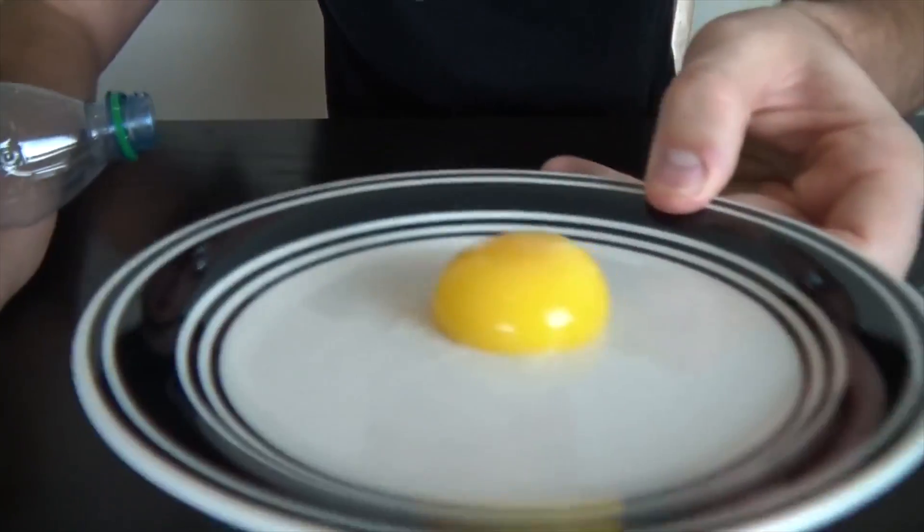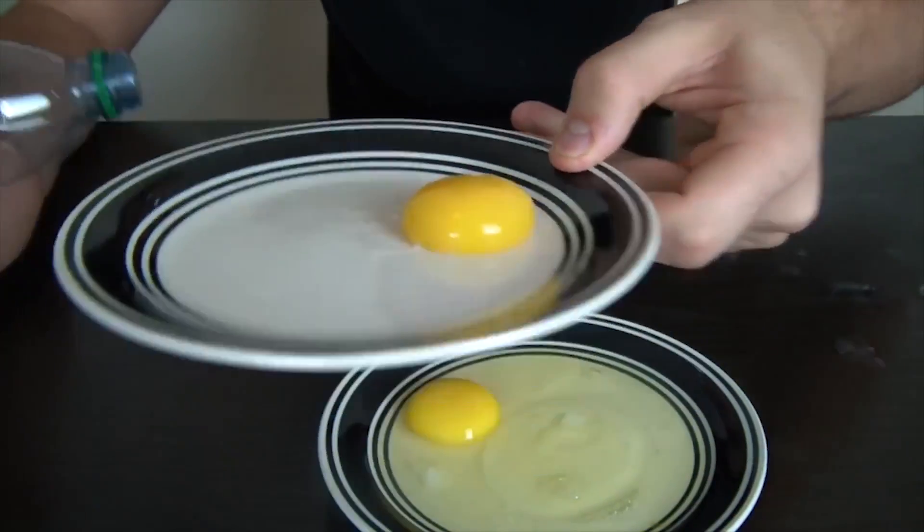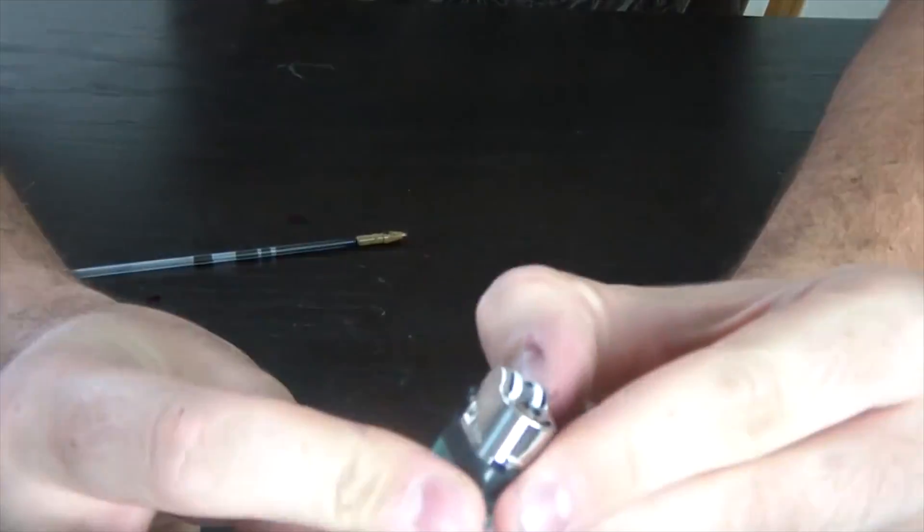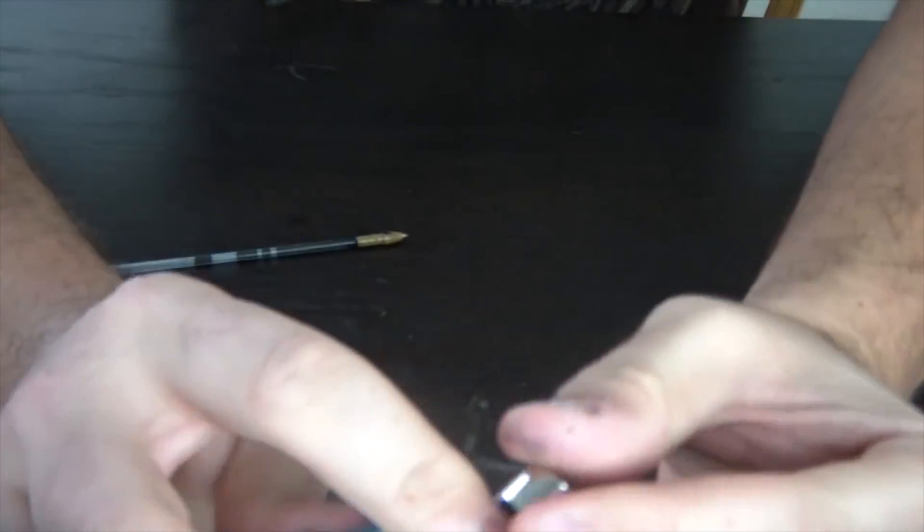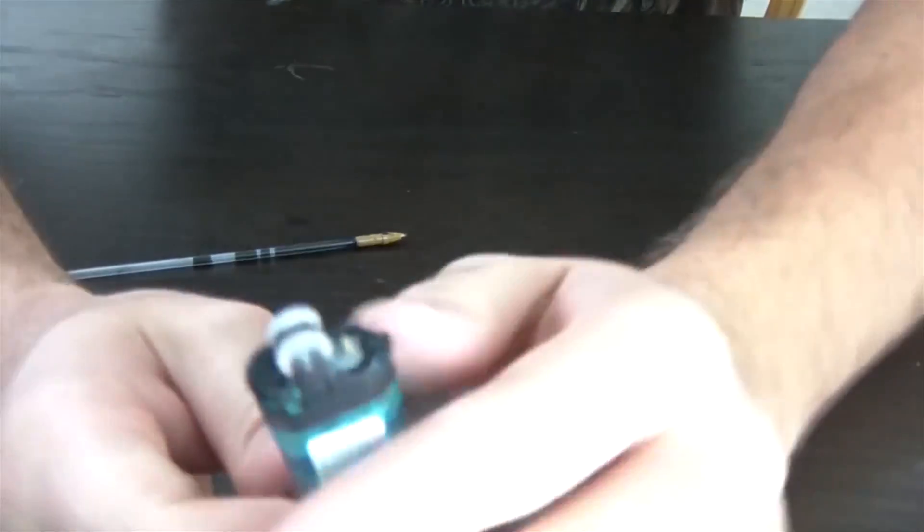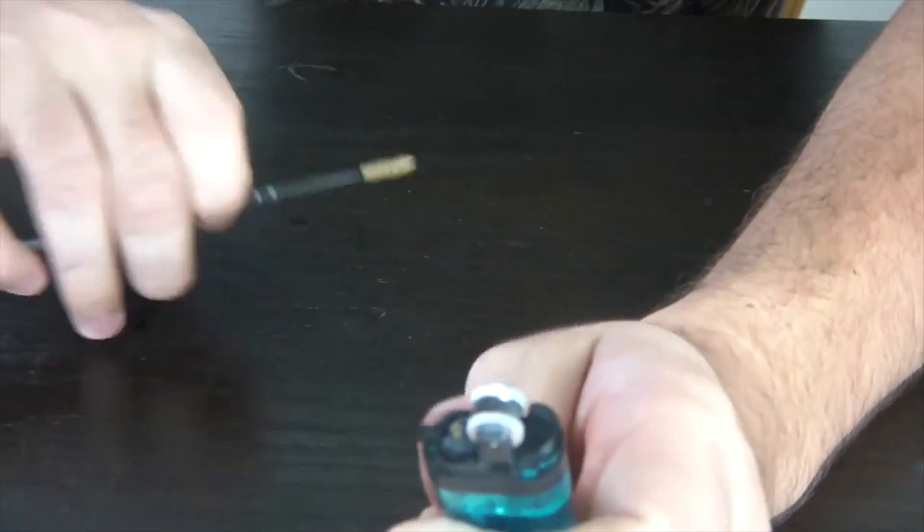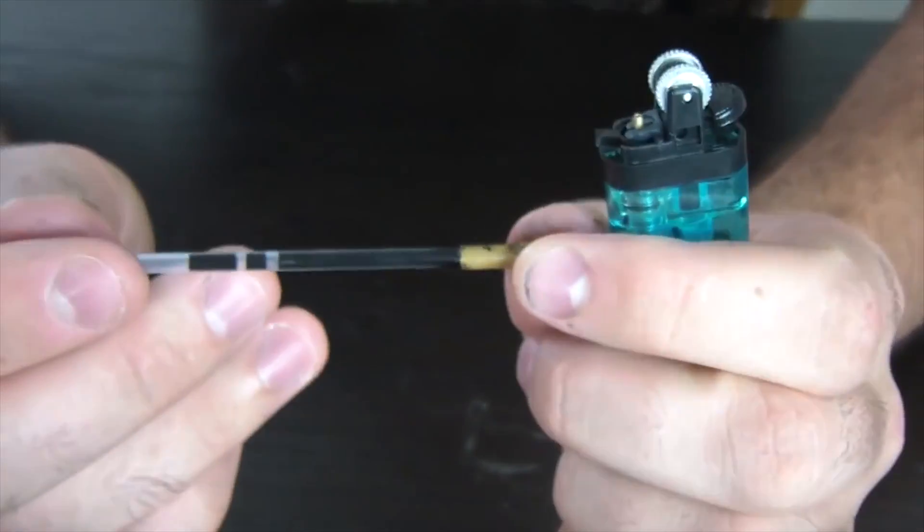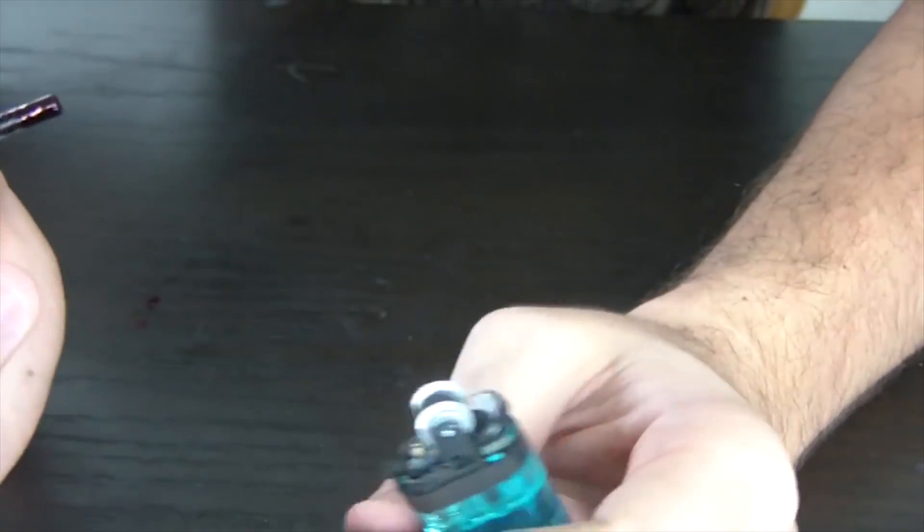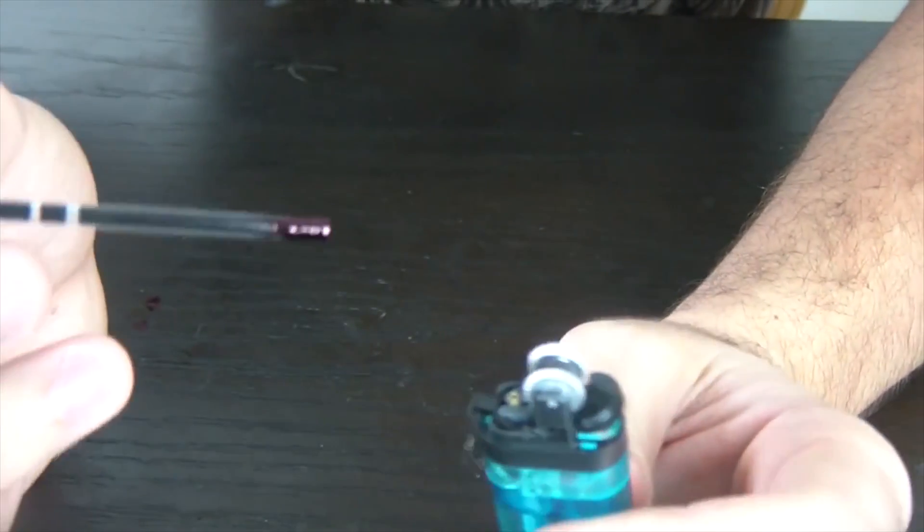Okay, check it out. Perfectly yolk egg without any white stuff. So first thing you're gonna do is take off this thing. Metal part, you don't have to, but I'm gonna do it for you so you can see really well. And then the pan, I took it out, you see? You pull this thing out.